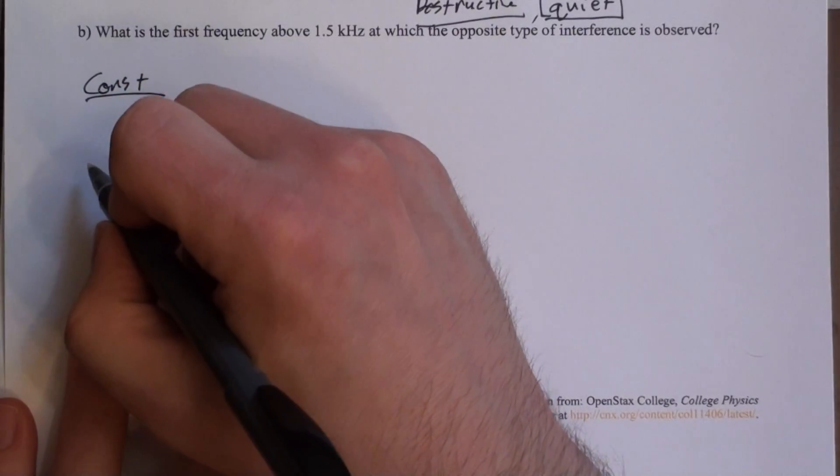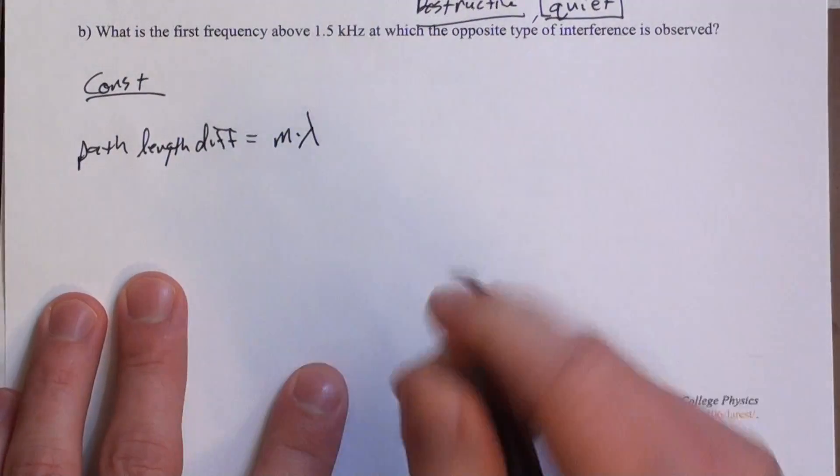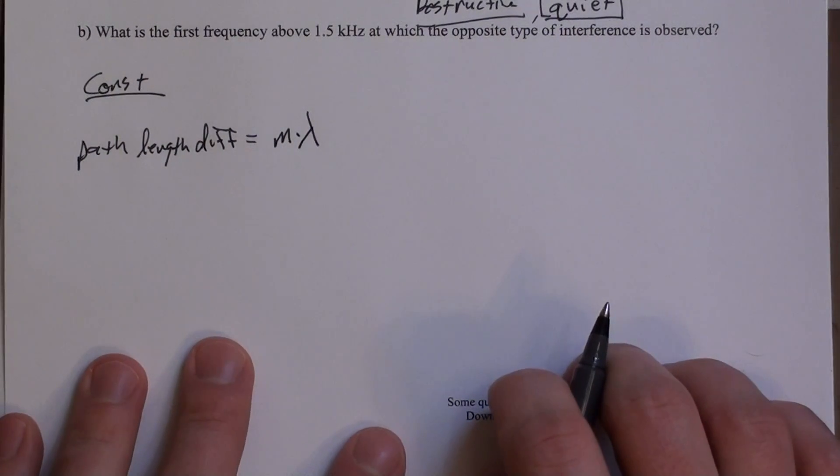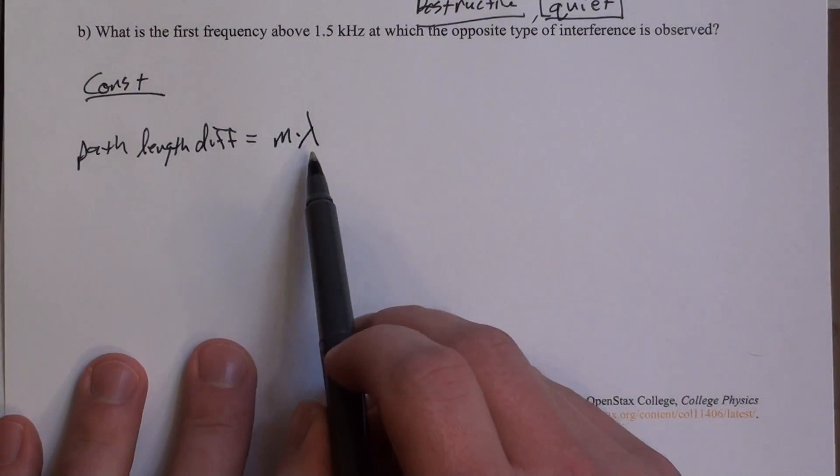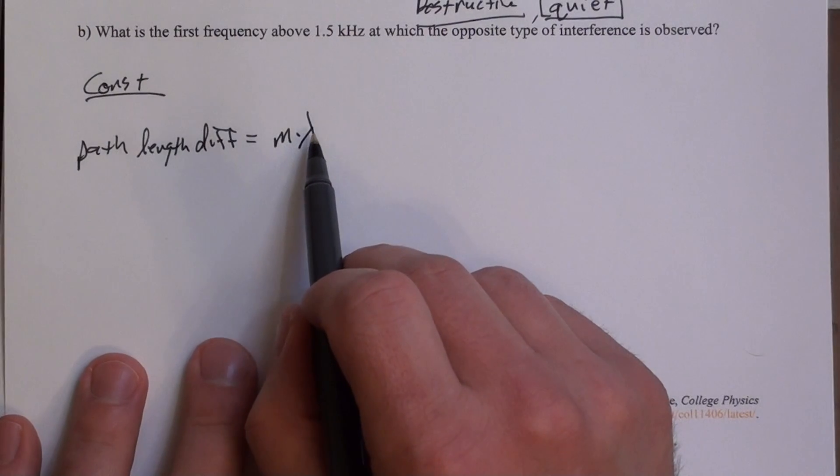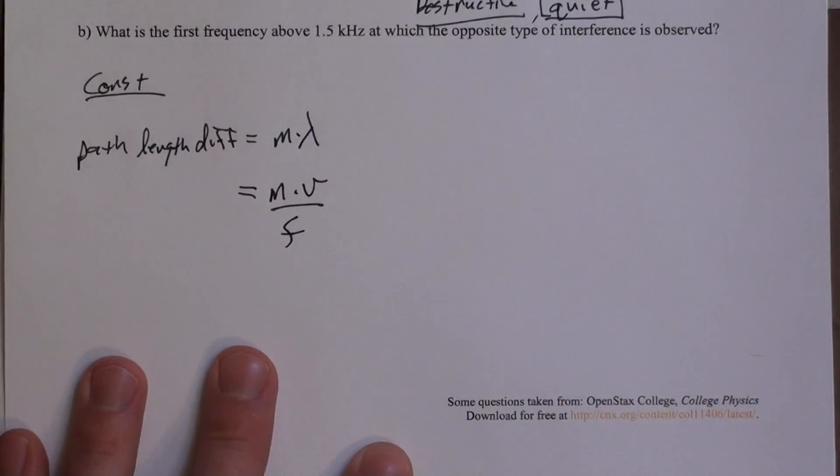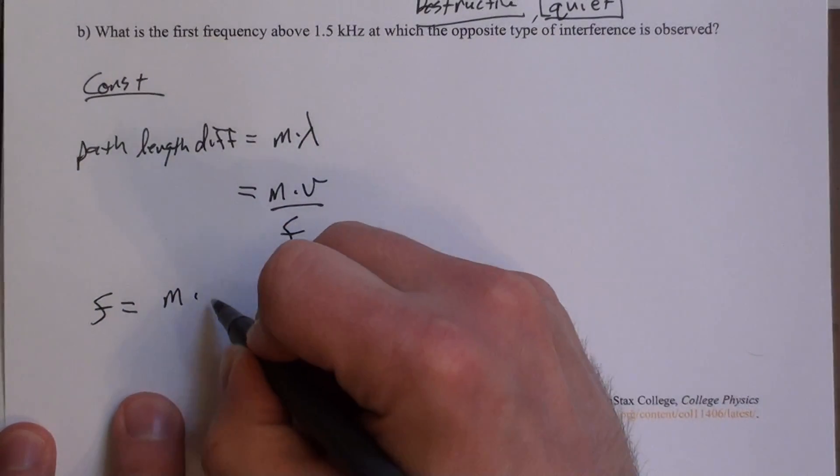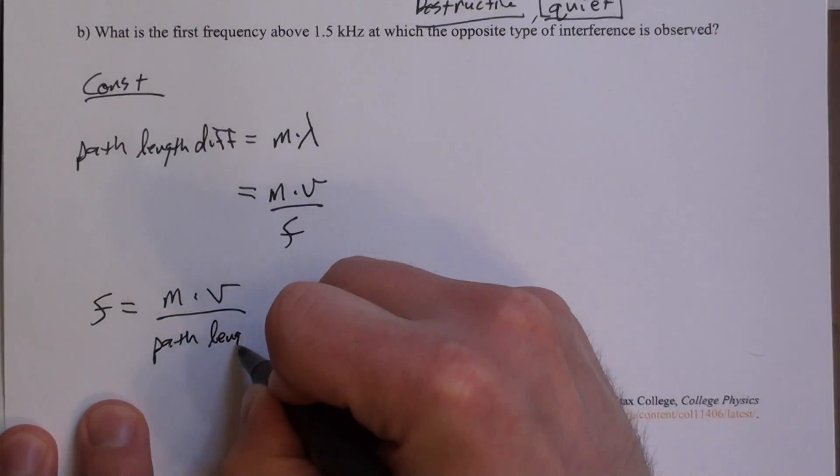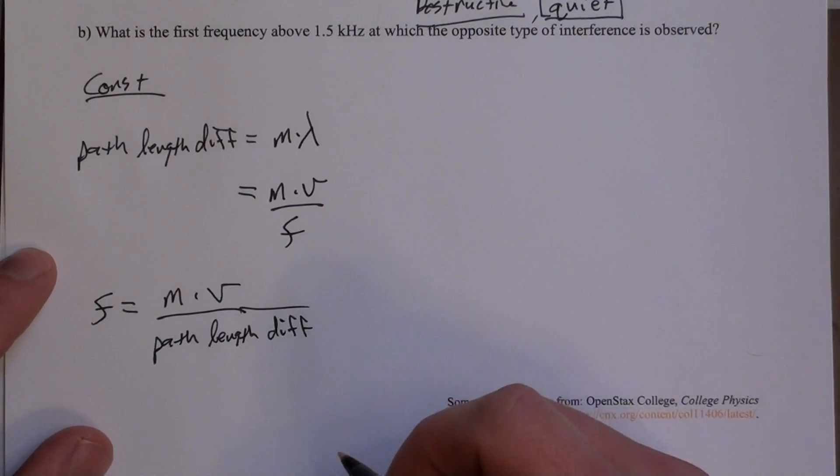So for constructive interference, we're looking for the path length difference to be an integer number of wavelengths. So I already have a path length difference. I found it above. Now I'm looking for a new wavelength corresponding to a new frequency. But really what I'm asking for is frequency, so I'm going to replace lambda with v over f. So I'm going to write m times v over f, where f is really what I'm interested in. So I can solve this equation for f. I could say f equals m times v divided by the path length difference.